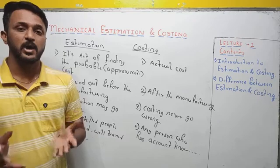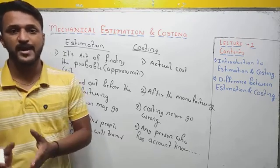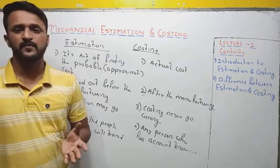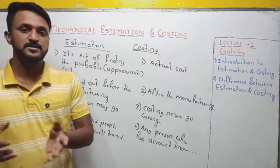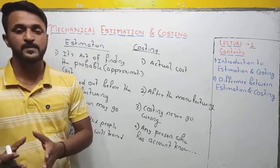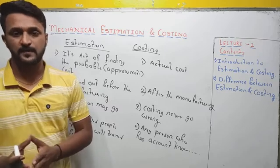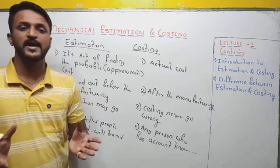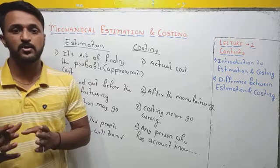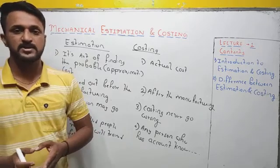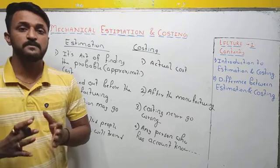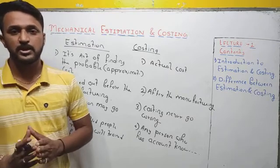In foundry also, same approach. In mechanical estimation, we will study the estimation of time — how much time a particular process takes to complete. For example, if a component has turning, threading, boring, tapping, and drilling processes, every process requires time. We add all those times to get the total time required to complete a job, so that we can obtain the labor cost. In mechanical estimation, while estimating a particular thing, we focus mainly on materials, labor, and expenses. Adding all three gives the probable or approximate cost of the product before it is actually manufactured.